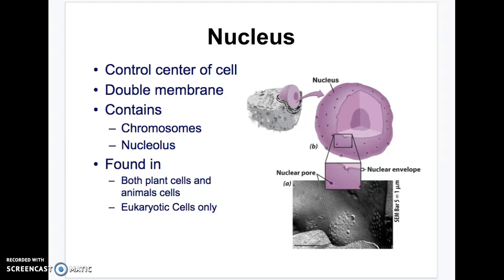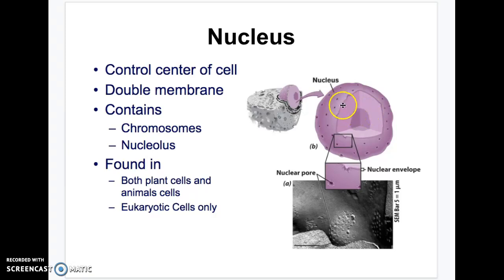The nucleus is found in eukaryotic cells only — both plants and animals — and this is the control center, where the big boss lives. This is where the DNA exists. It actually has two membranes, a double membrane. It contains chromosomes and a little structure on the inside called the nucleolus, which is actually where ribosomes get made.